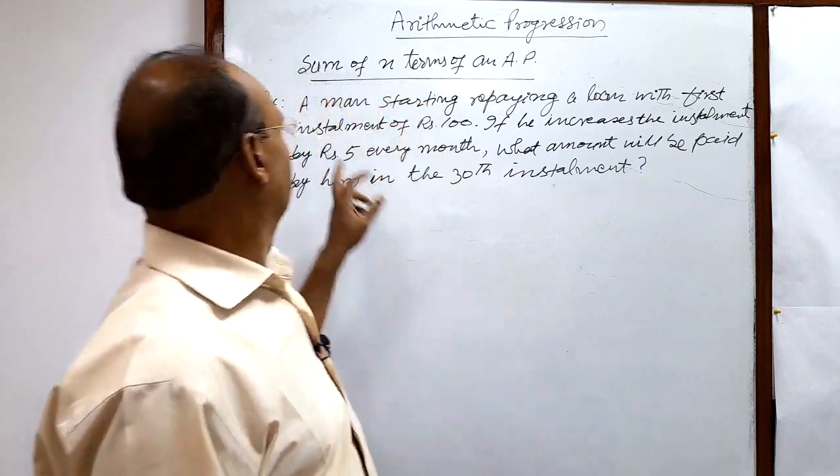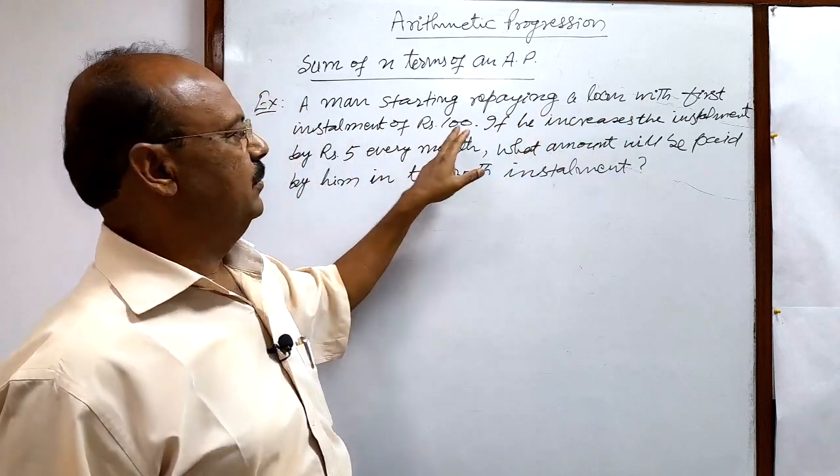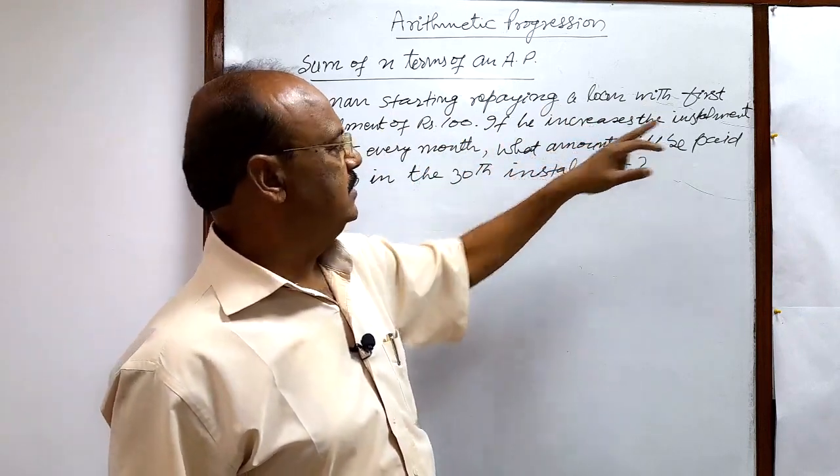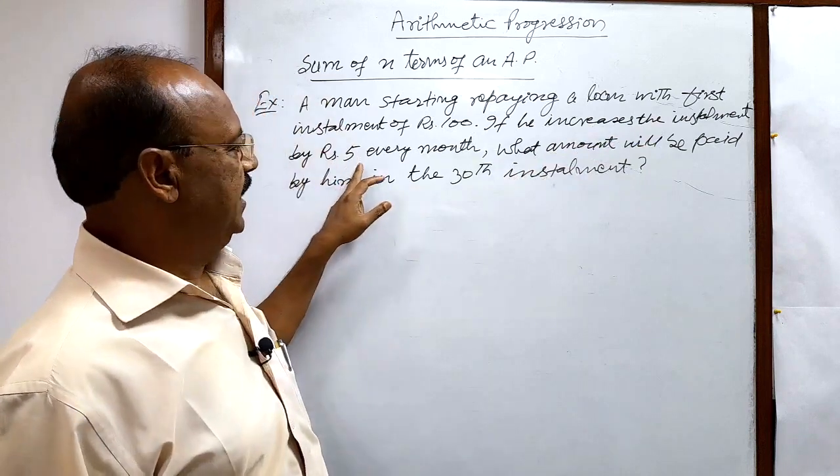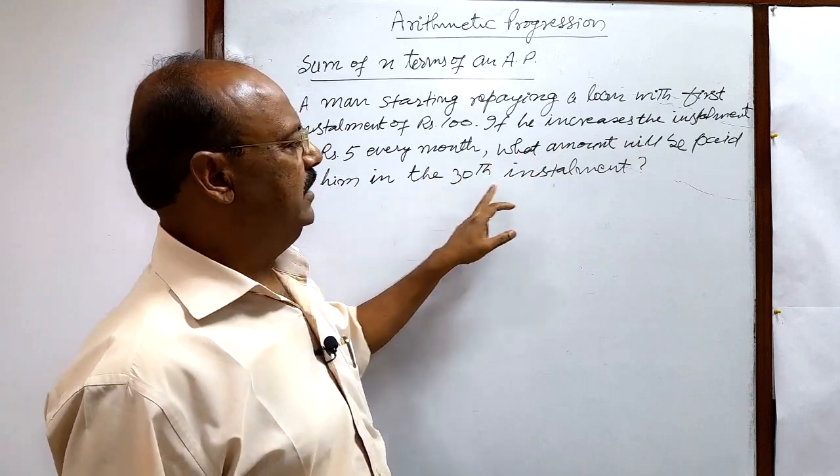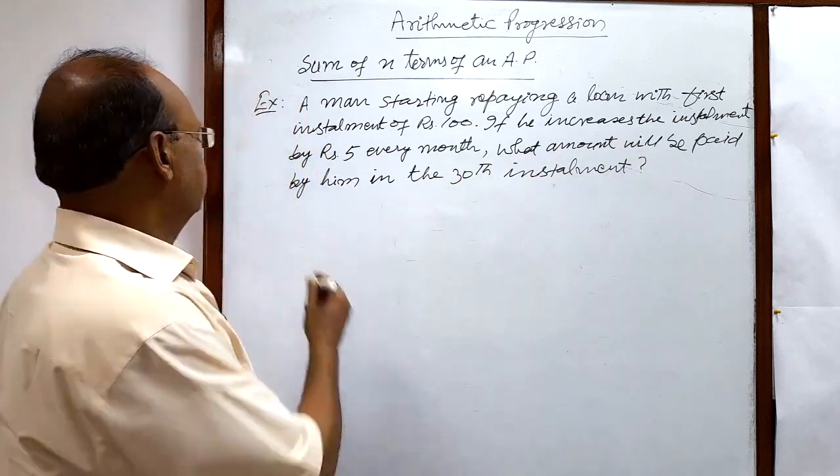Here's the question: a man is starting to repay a loan with a first installment of rupees 100. If he increases the installment by rupees 5 every month, what amount will be paid by him in the 30th installment? The question is very simple, let us see.